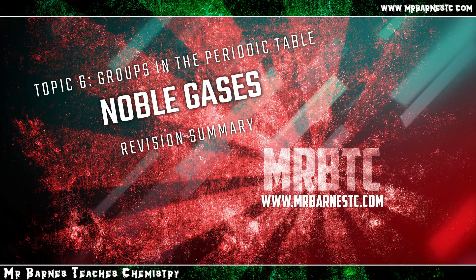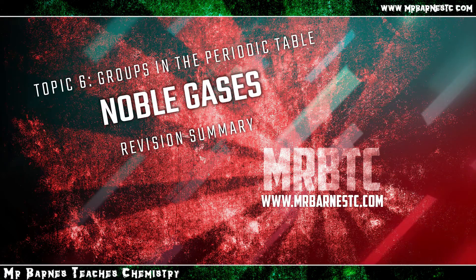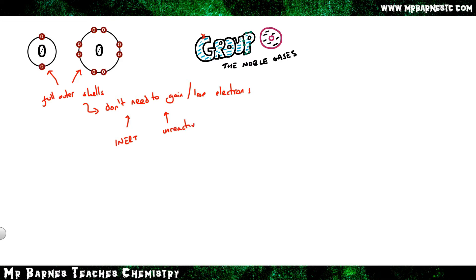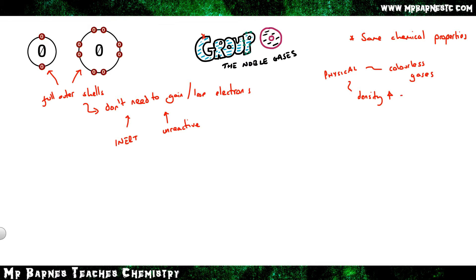The fifth part covers the noble gases. The key point is that noble gases have full outer shells, meaning they don't need to gain or lose electrons, making them inert or unreactive. They all share the same chemical properties and are all colourless gases, though their density increases as you go down the group.